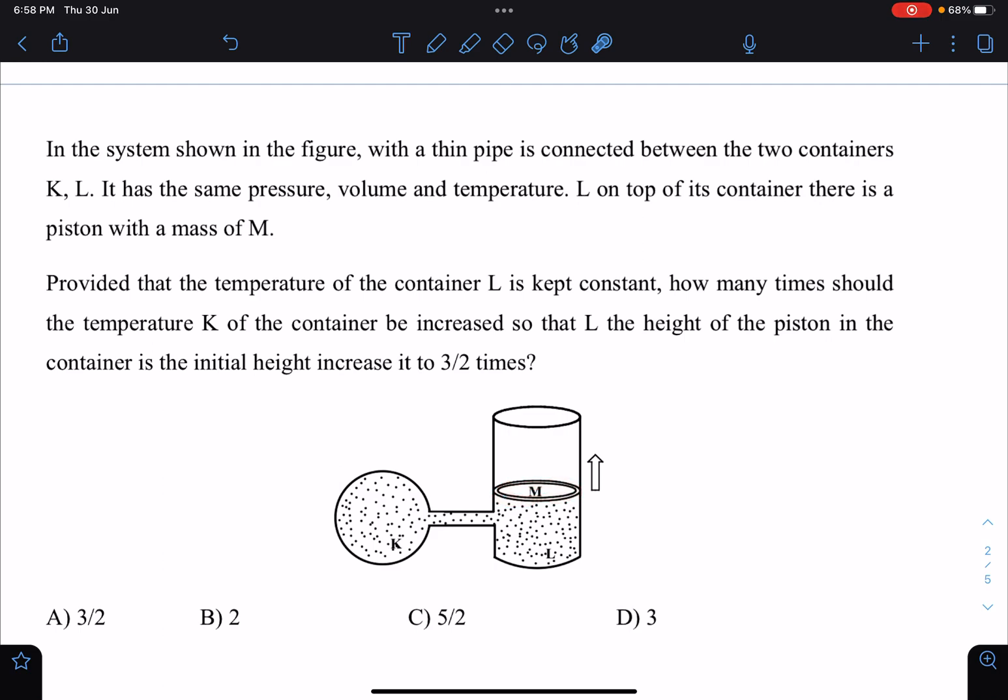Provided that the temperature of container L is kept constant, so this part has a constant temperature. How many times should we increase the temperature of this so that L, the height of this, so that initially this height L becomes 3 by 2 of the first one?